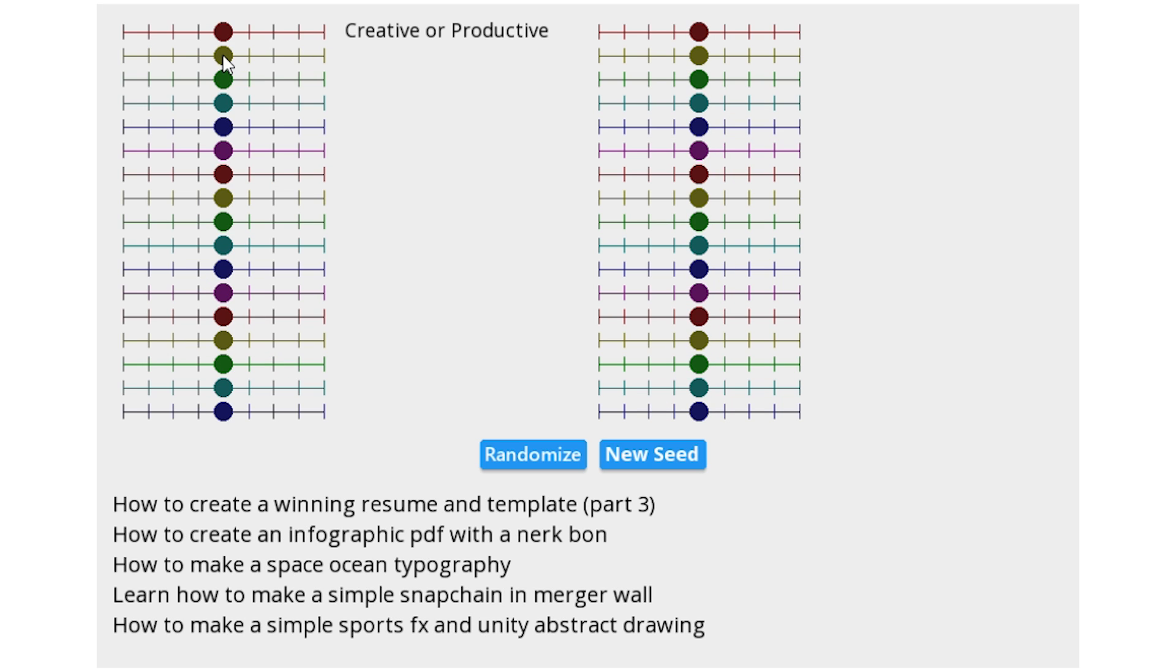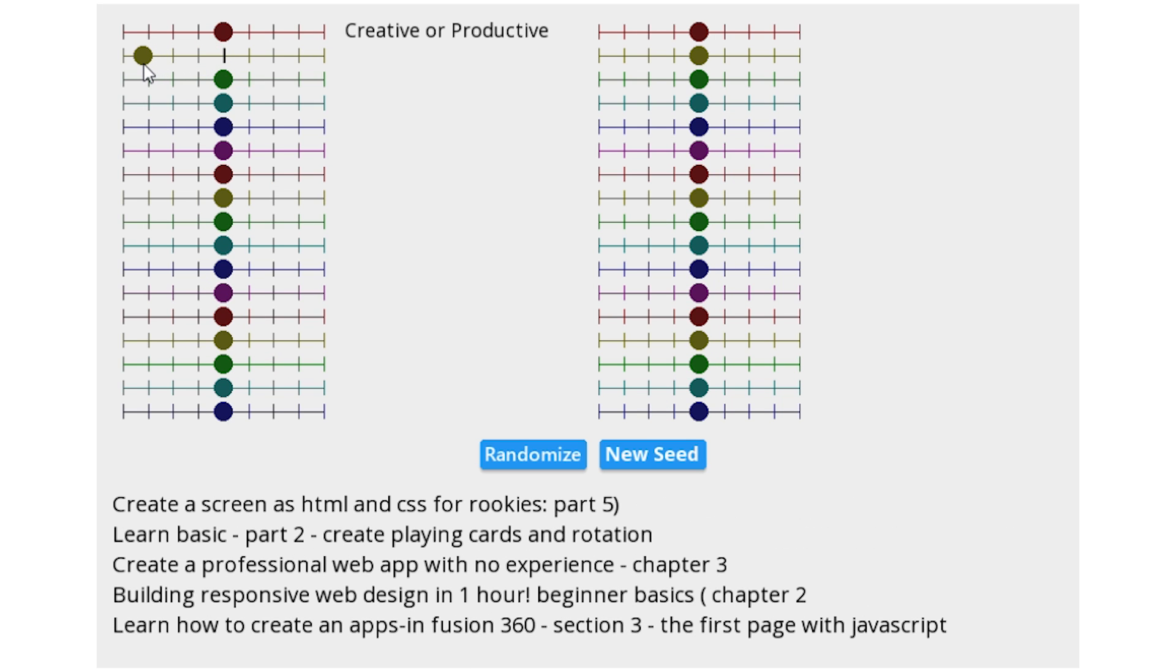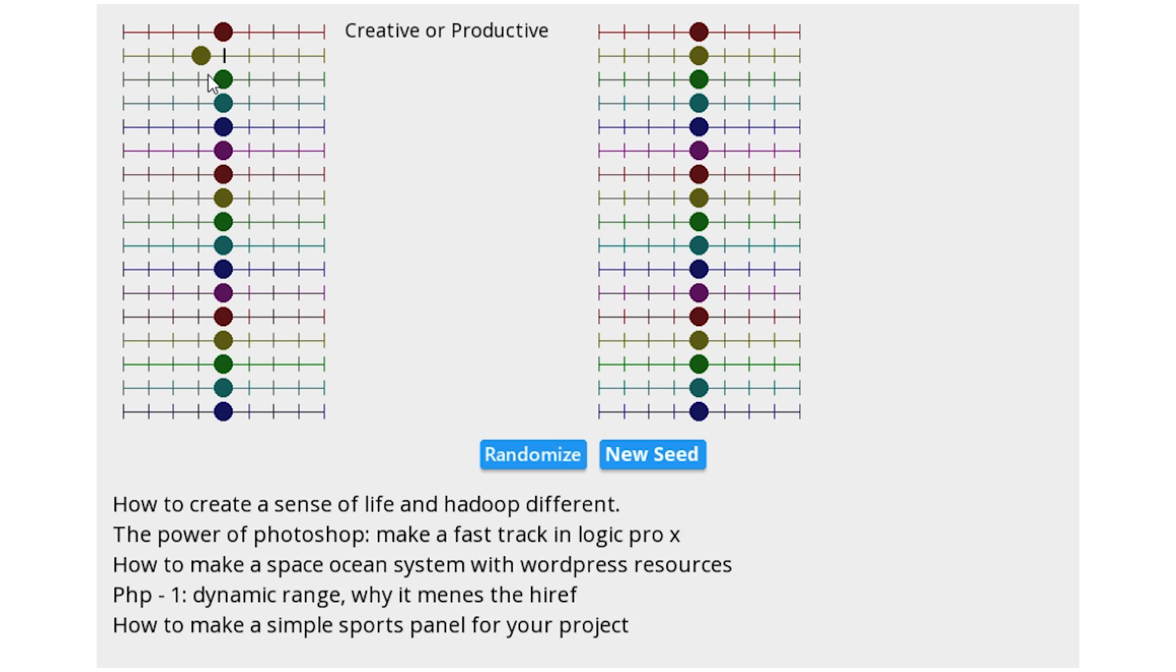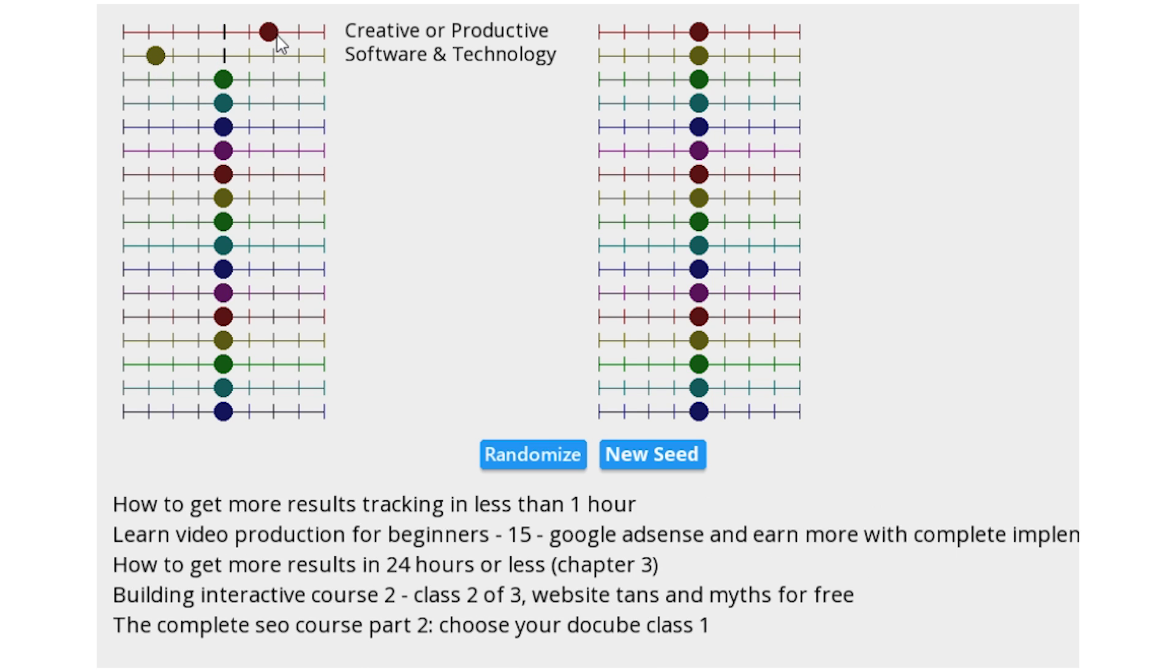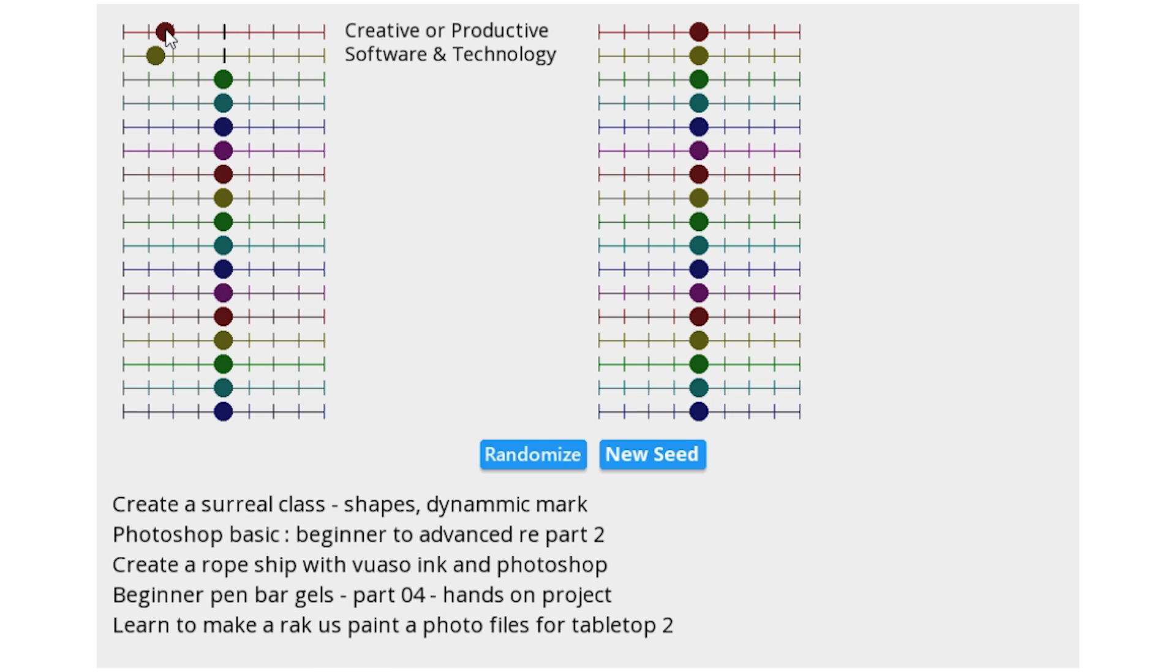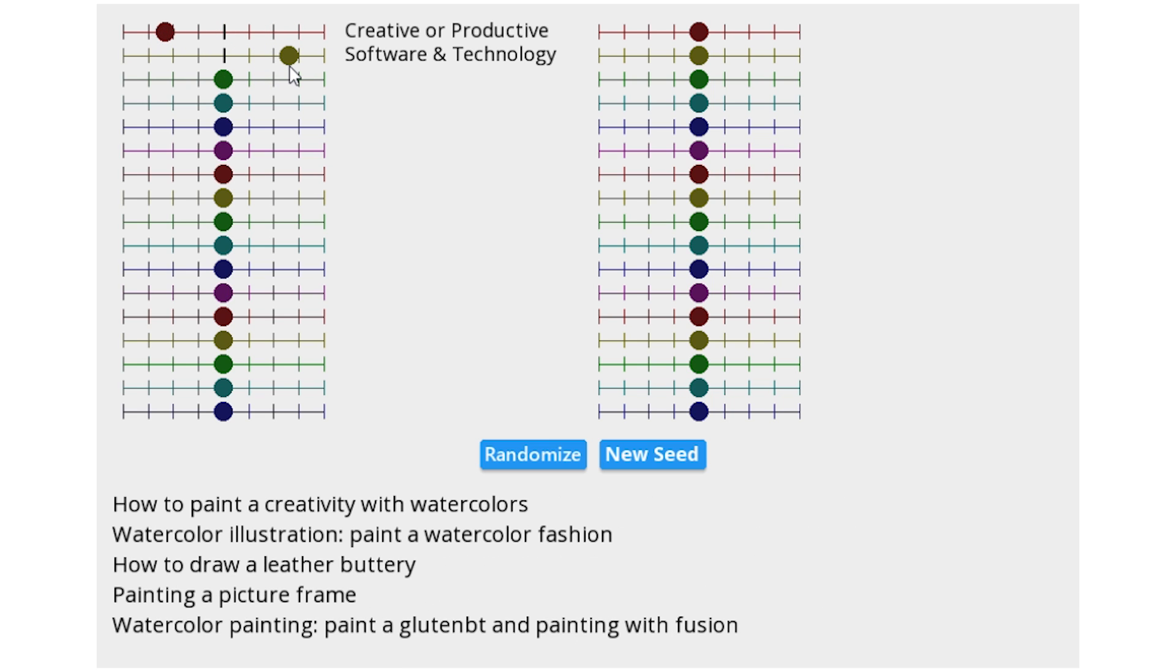The next component is really surprising. It took me a little while to figure out, but it seems to reliably control if the course is about software and technology or not. That's also a pretty good split, and you can see how that's orthogonal to our first component, since each combination exists independently.